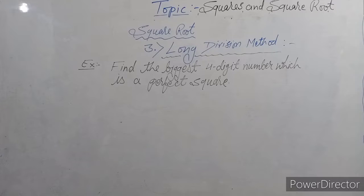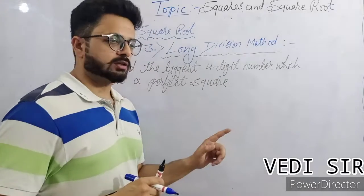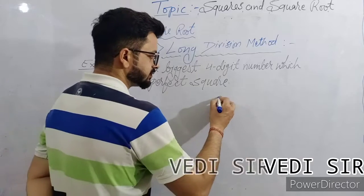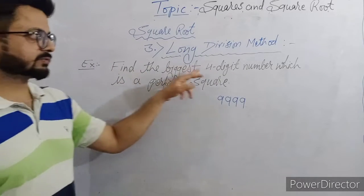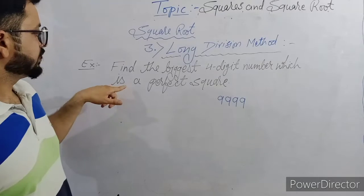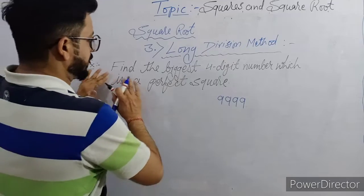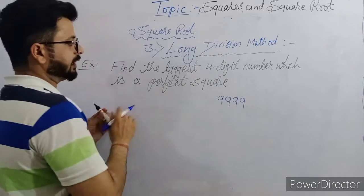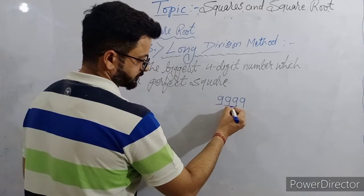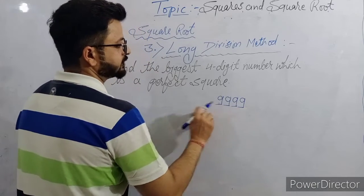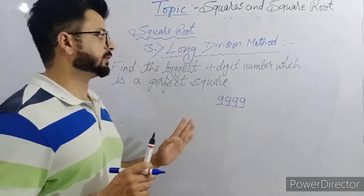Now this question: find the biggest four-digit number which is a perfect square. The biggest four-digit number is 9,999. Just now I'm focusing on this — the biggest four-digit number is four nines.